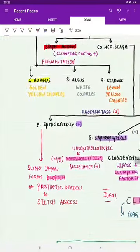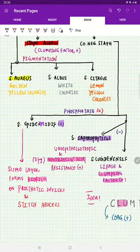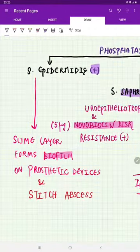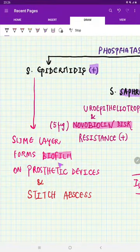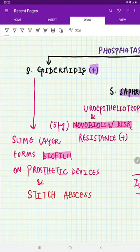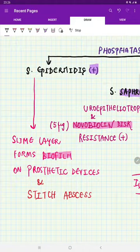Coagulase negative staphylococcus, first is Staphylococcus epidermidis, which is phosphatase test positive. Very simple. Remember epidermidis will form a biofilm because it has a characteristic of forming a slime layer that forms a biofilm on prosthetic devices. It is one organism known to cause stitch abscess. When you are taking stitches for managing the wound, it can result in a complication—stitch abscess from Staphylococcus epidermidis.